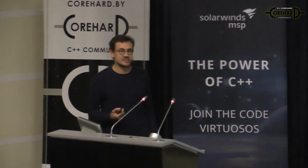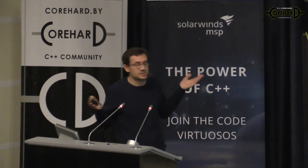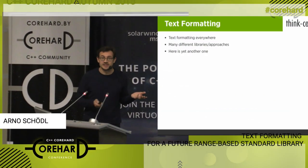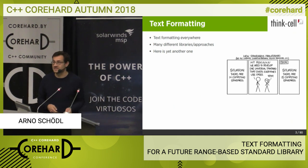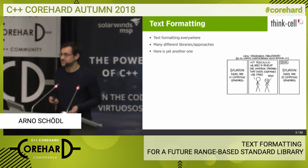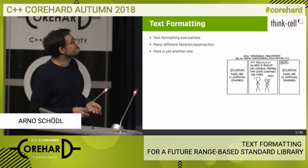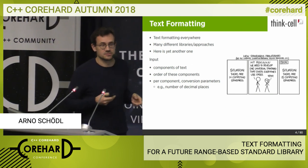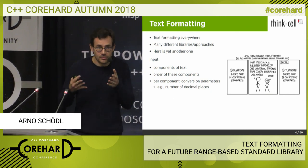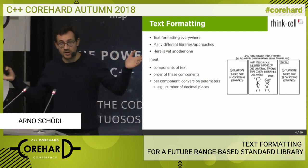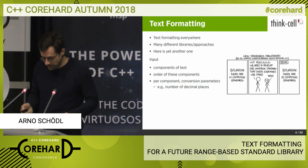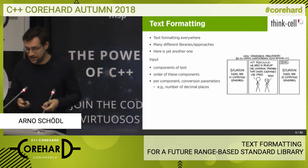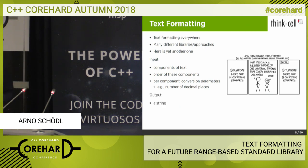We're going to talk about text formatting, which is of course a very normal, old topic. Everyone has been doing text formatting for a long, long time, and there are many different libraries for it — here is another one from us. You know the XKCD comic: if there are 14 competing standards, now we have 15. So what's text formatting? Basically, you take components of text — literal text, strings, or something you want to turn into a string, like a number you want to format. You have the order of all these components and you want to string them together into a resulting string, with parameters like the number of decimal digits. At the end, what you get is the string.